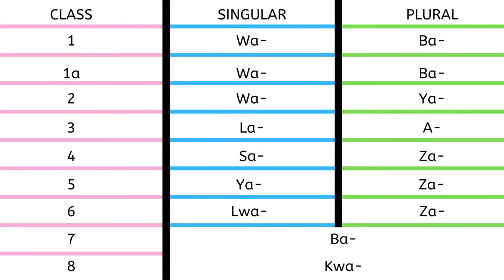Here are the possessive concords for each class. I won't say them one by one because I'll just sound silly. Wa, ba, la — you see.